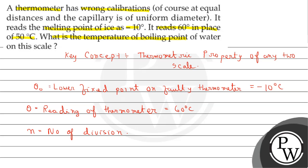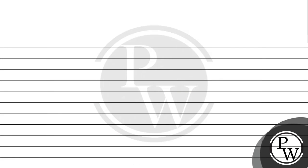Therefore here we can write the formula: (θ - θ₀) / n equals to (50 - 0) / 100. Further solving this, here we will get the value of n equals to 140. So number of division on faulty thermometer is 140.